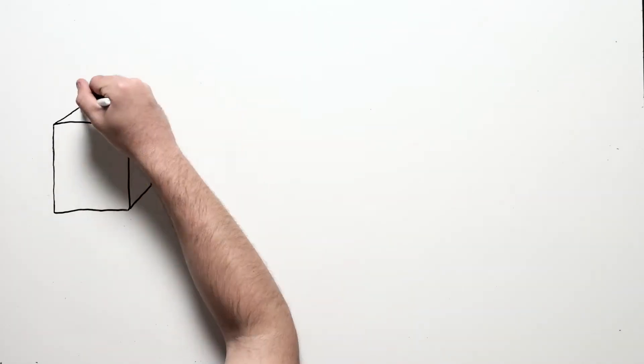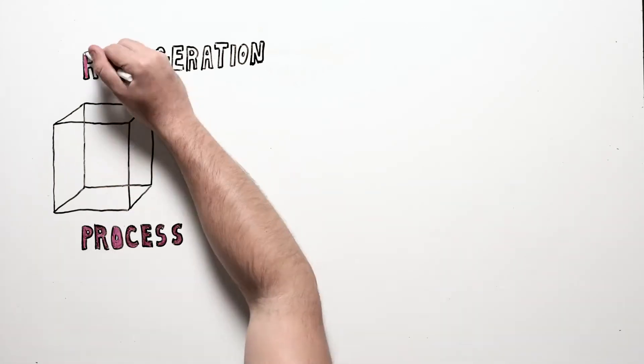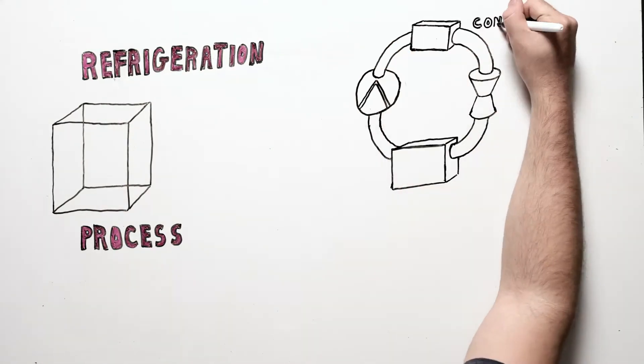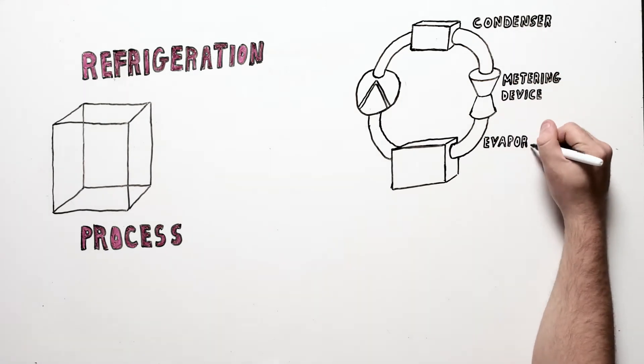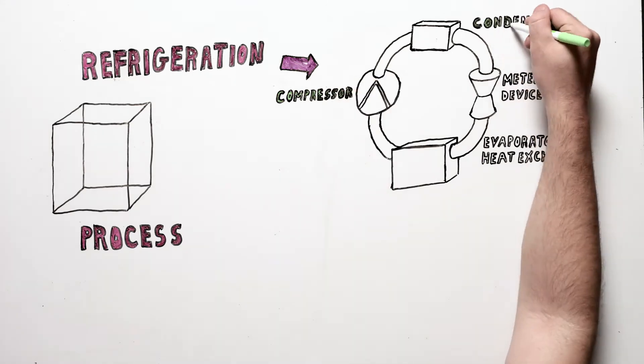There are two major parts of a process chiller: the refrigeration circuit and the process fluid circuit. The refrigeration circuit has four basic components: the condenser, metering device, an evaporator which is also known as a heat exchanger, and the compressor.